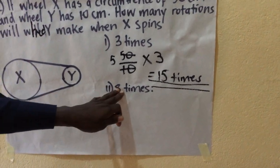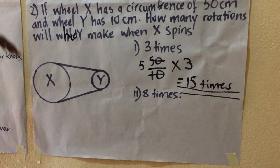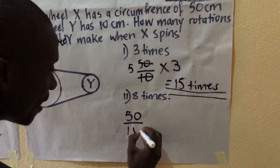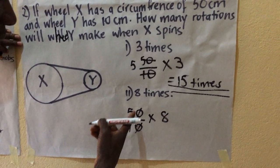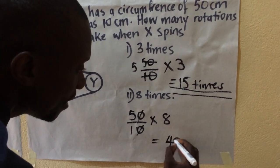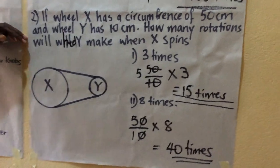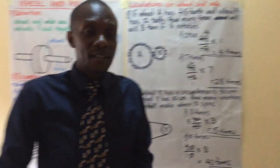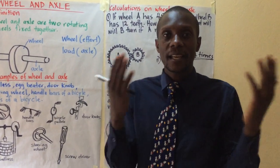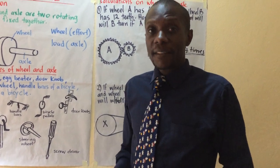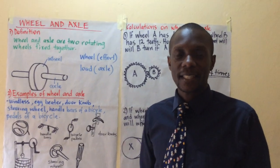Part two: what if the big wheel spins eight times? That is 50 divided by 10, times eight — so five times eight, which is equal to 40 times. We have been looking at wheel and axle. We have defined wheel and axle, seen examples of wheel and axle, classified wheel and axle into gear drives and belt driven wheels, and finally we did some calculations on wheel and axle. Thank you for watching to the very end.